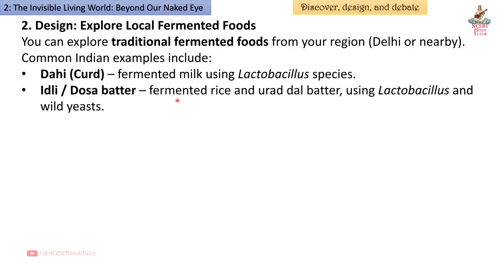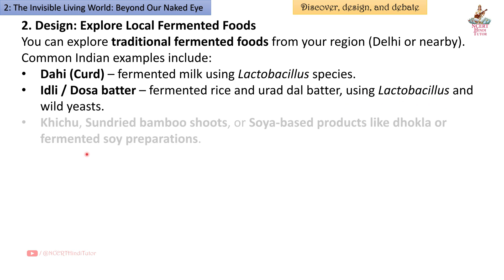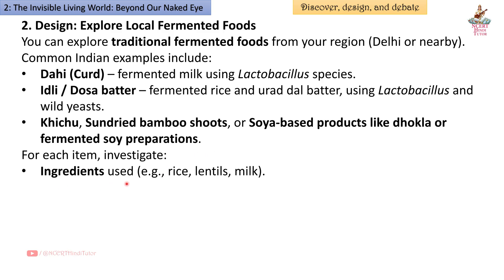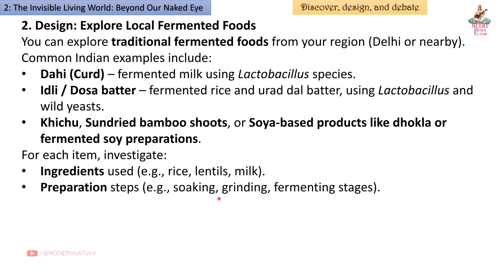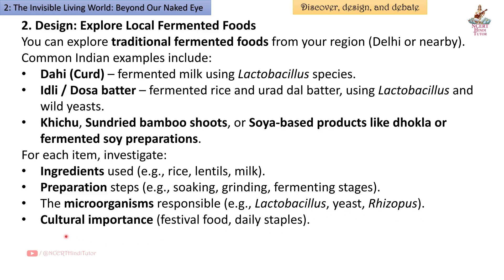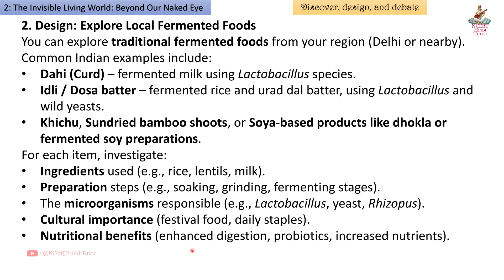Idli and dosa batter — fermented rice and urad dal batter using Lactobacillus and wild yeast. Also ketchup, sun-dried bamboo shoots, or soya-based products like dhokla or fermented soya preparations. For each item, investigate ingredients (rice, lentils, milk), preparation steps (soaking, grinding, fermenting), and the microorganisms responsible such as Lactobacillus, yeast, or Rhizopus.